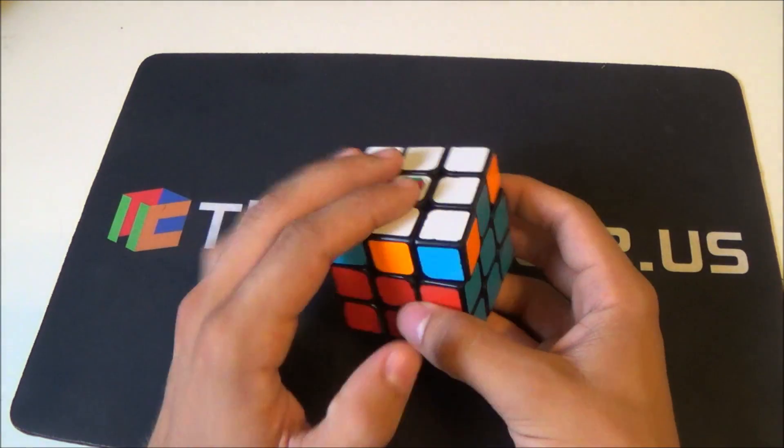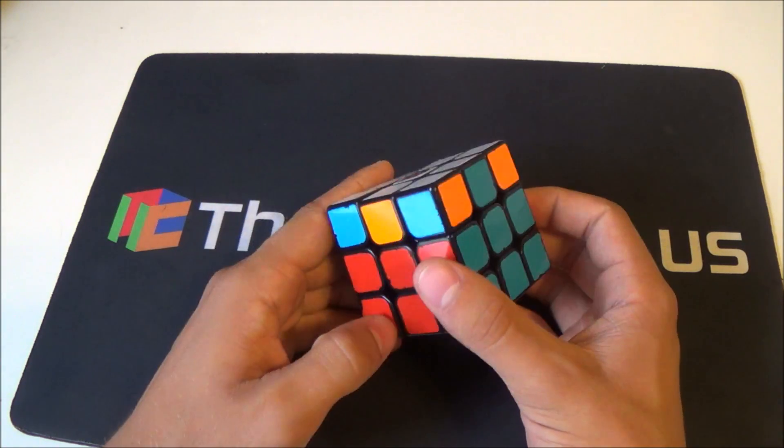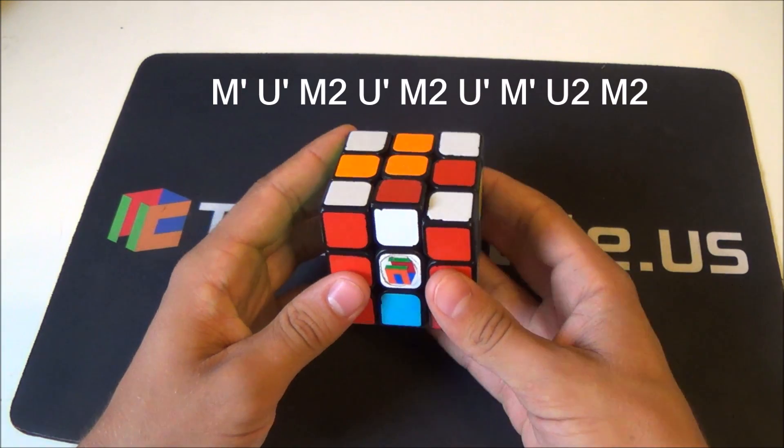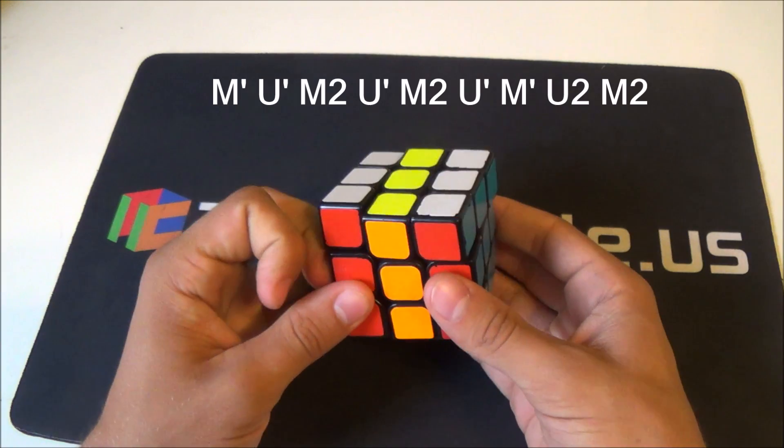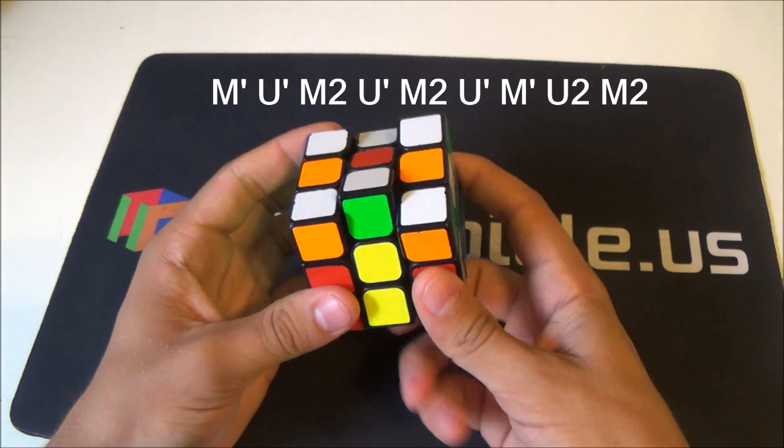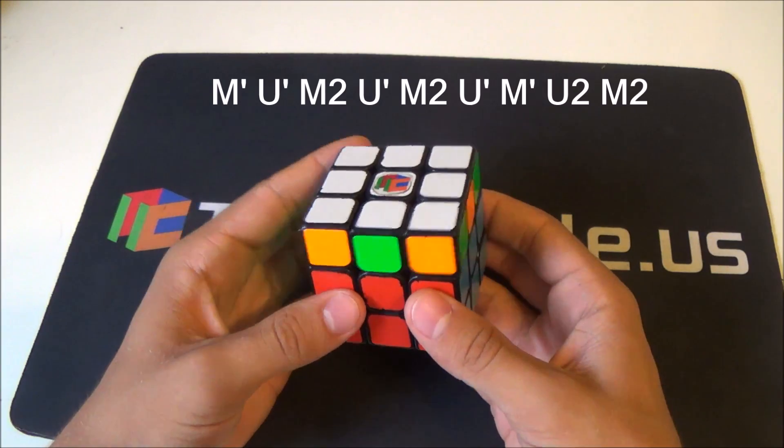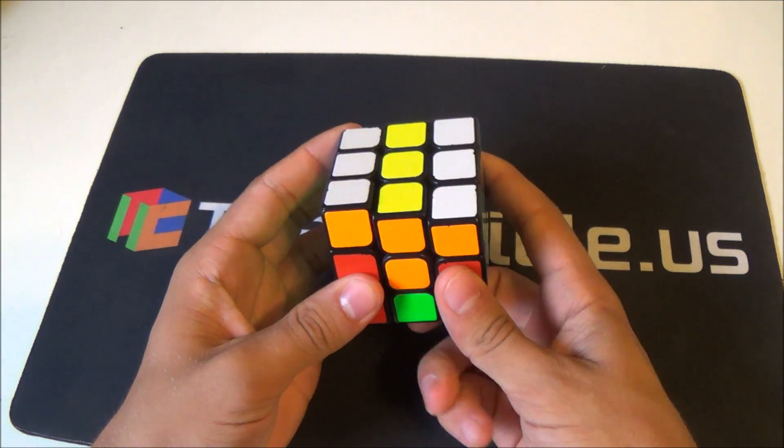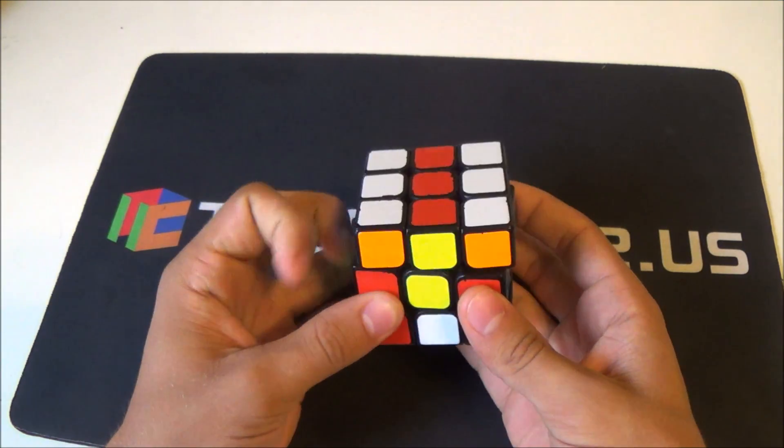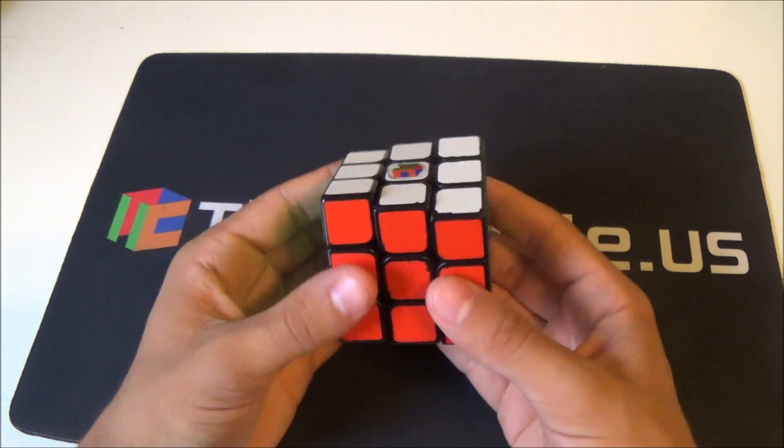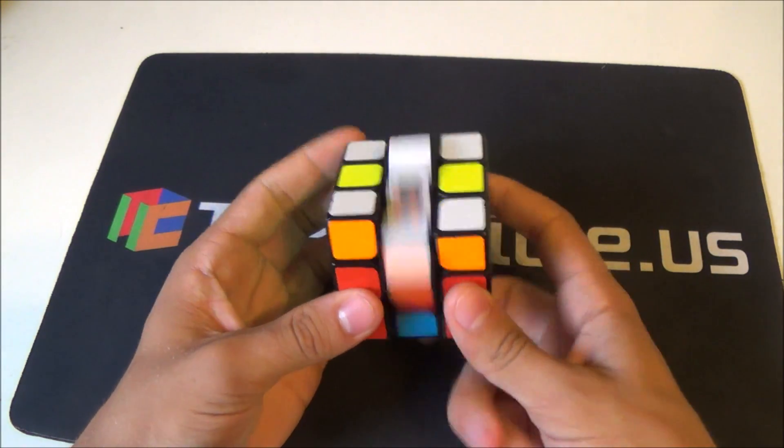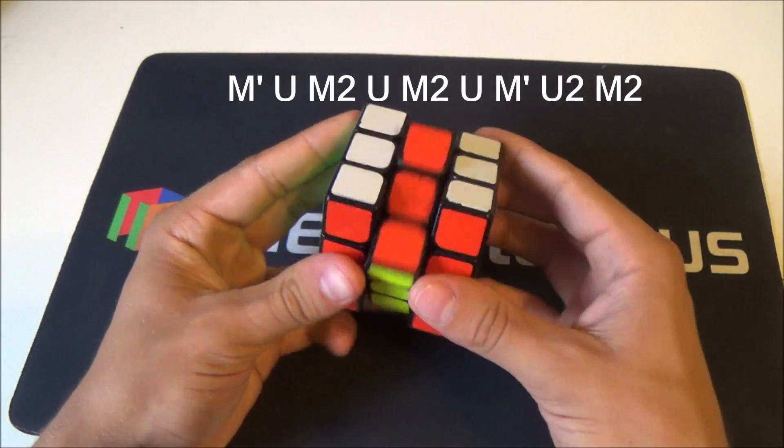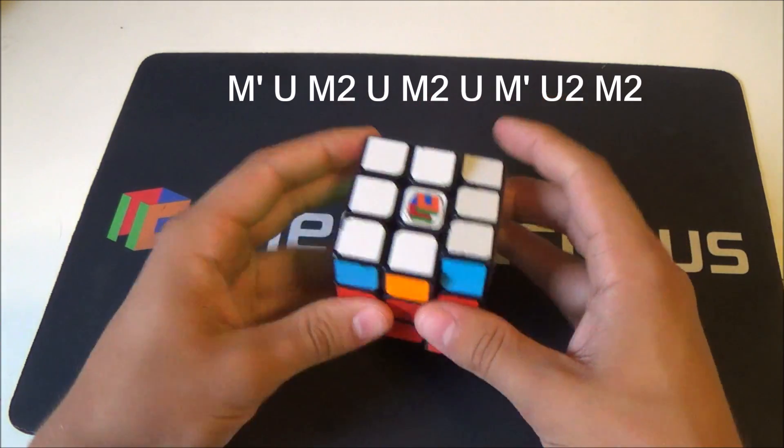Now for the Z-perm. This is another one where you can mirror it to use U moves if you don't like U-prime. So we're going to execute it from here. And I know a lot of people, when they first start, use this one. And that's actually quite a bit slower than the other one. So if you're using the one that starts with a bunch of M2s like an H-perm, you should definitely switch to this one. And as I said, you can use U moves if you want, but I'm not good at it.